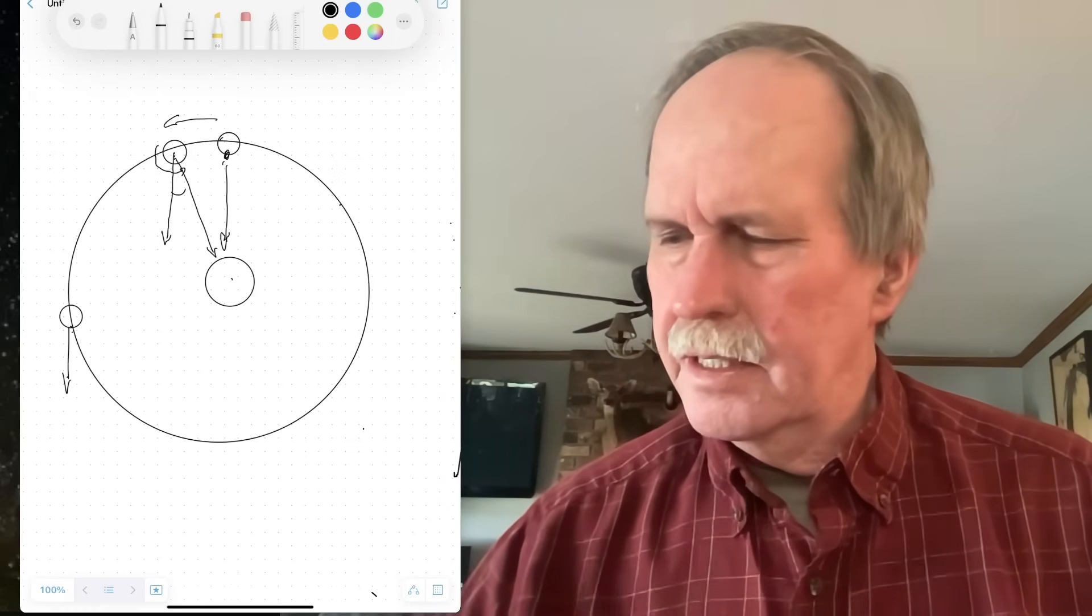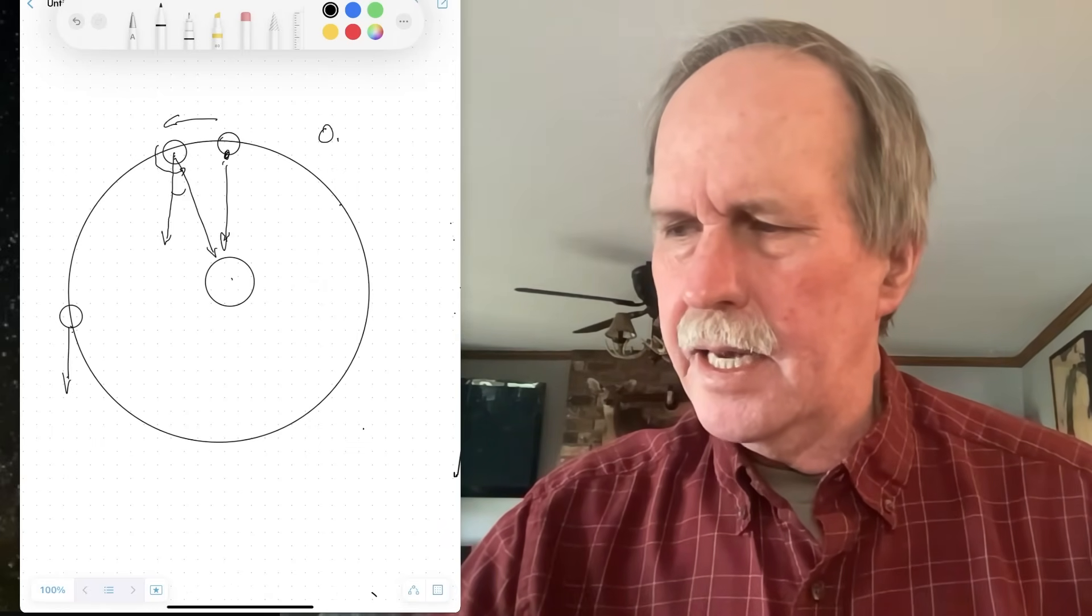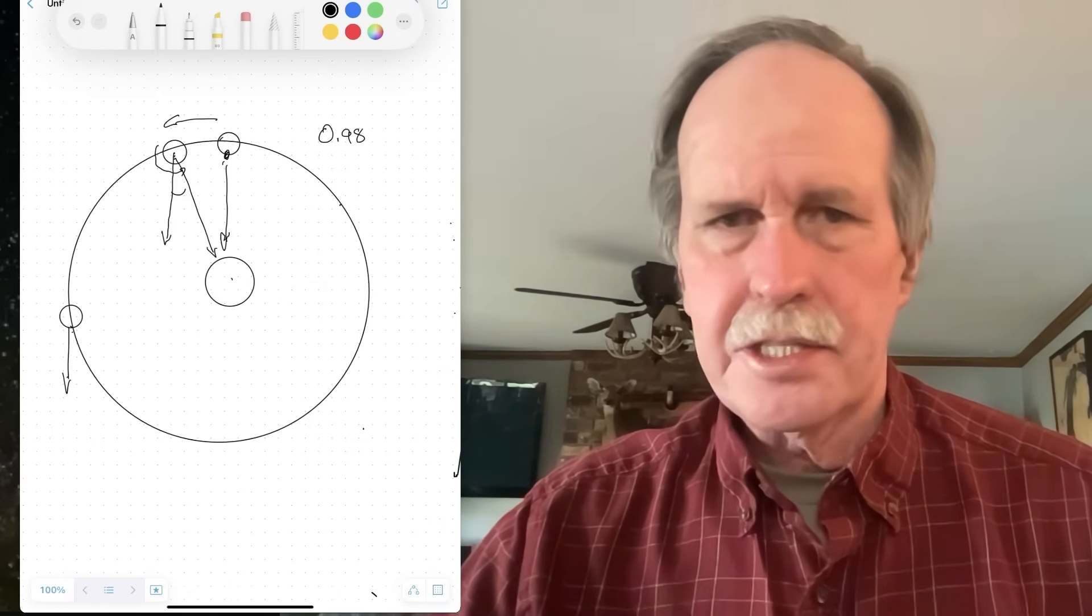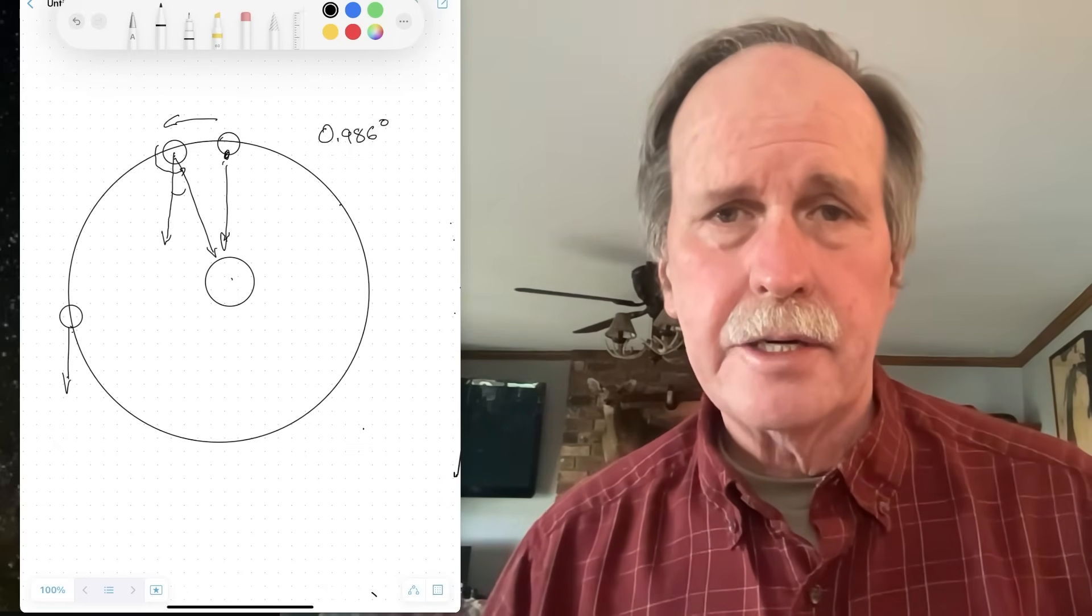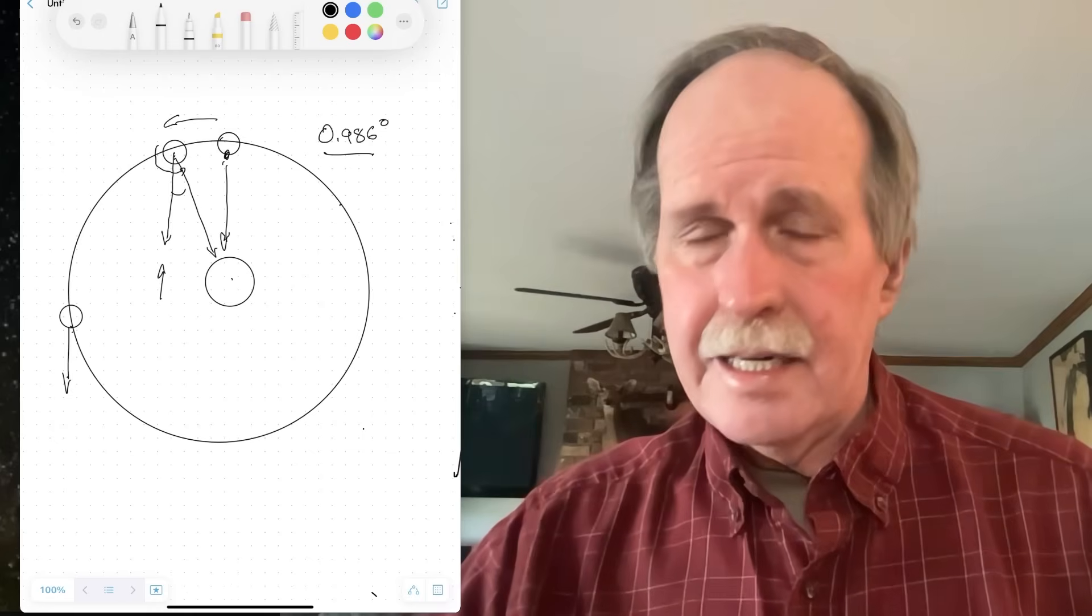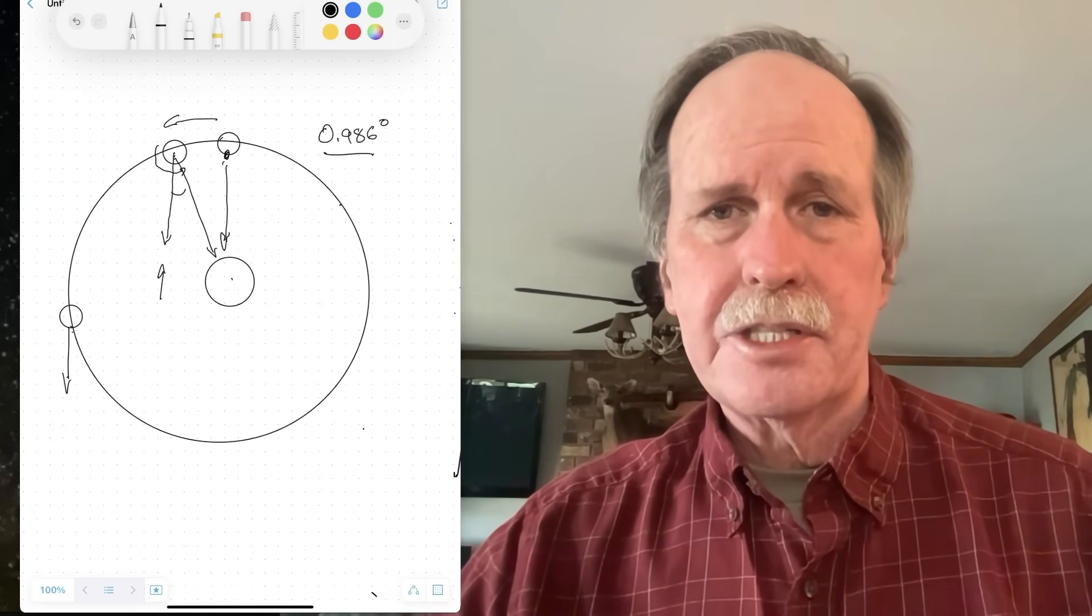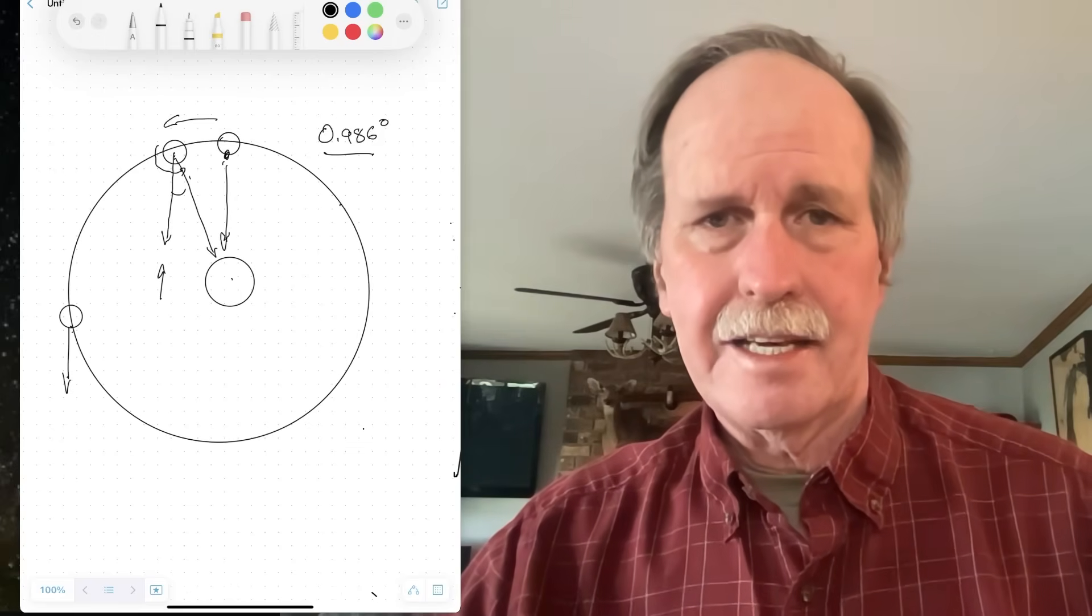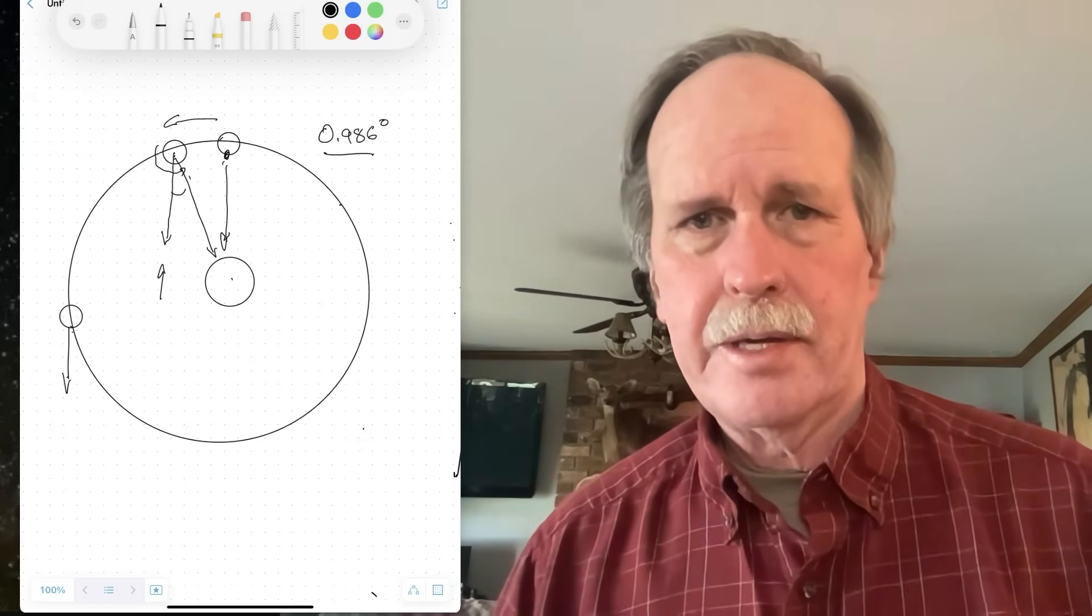Now that angle, if you want to get the number for it, is 0.986 degrees. So in other words, the Earth has to rotate 360 degrees to get back to this position, and then it needs to rotate an additional 0.986 degrees in order to have the same spot facing the sun again, as a result to be solar noon on Earth at that same location.